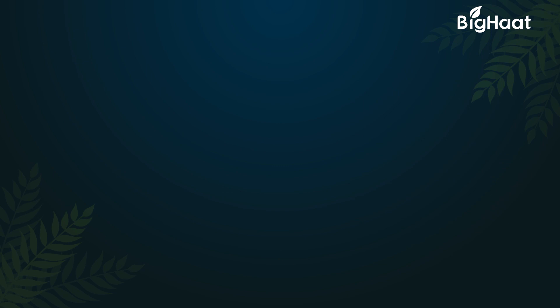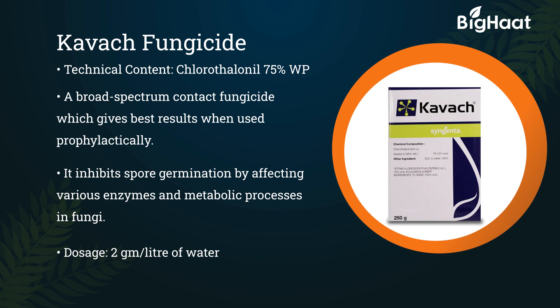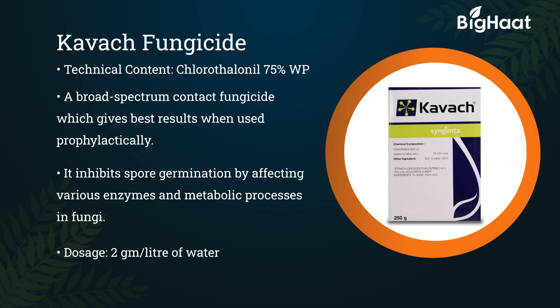Kavach fungicide: its technical content is Chlorothalonil 75% WP. It is a broad-spectrum contact fungicide which gives best results when used prophylactically. It inhibits spore germination by affecting various enzymes and metabolic processes in fungi. Its dosage is 2g per litre of water.